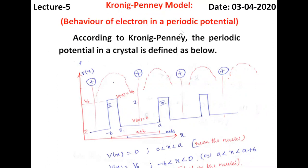To understand the behavior of electrons in a periodic potential, Kronig and Penney have defined the potential as shown in this figure. According to them, the potential has two regions: in region 1 the potential is 0, extending from x = 0 to x = a, and region 2 extends from x = 0 to x = minus b, where the potential is some constant V0.